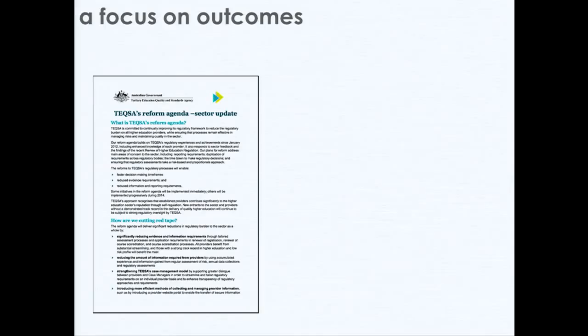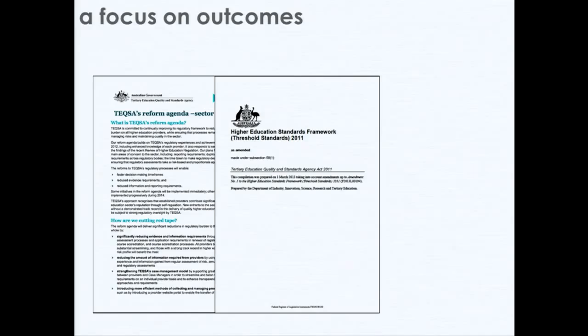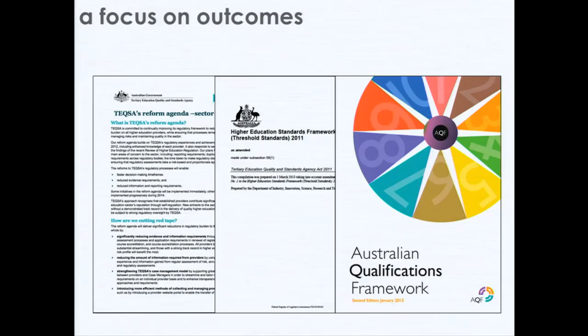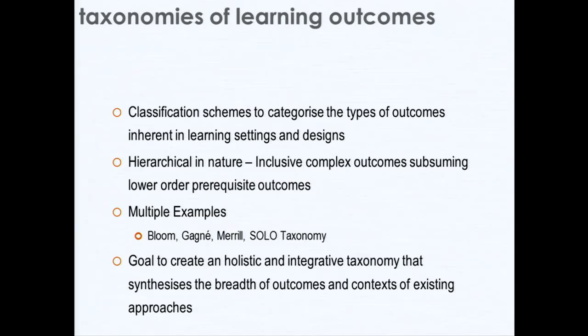If we get audited as a university, we have to show that students have met those outcomes at a level and quality expected from a whole range of organisational imperatives. We have things like TEQSA — the governing body of Australian higher education — the Higher Education Standards Framework, which sets thresholds, and the Australian Qualifications Framework, which defines what is a bachelor's or master's degree, the volume of learning, and expected outcomes. Most Australian universities have gone through massive curriculum renewal projects defining these outcomes and identifying where the evidence is.